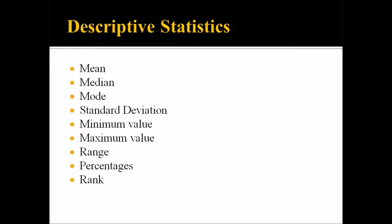Let's take a look at some of the descriptive statistics. You have the mean, which is of course the average; the median, which is the value in the middle of a set of values when they're ordered from lowest to highest; the mode, which is the value that appears the most times in a data set; the standard deviation, which is a measure of dispersion. Variance is also a measure of dispersion — the standard deviation is the square root of the variance. And then minimum and maximum values, the range, which would be the minimum value subtracted from the maximum value, percentages, and rank.